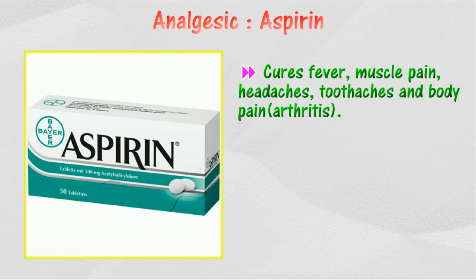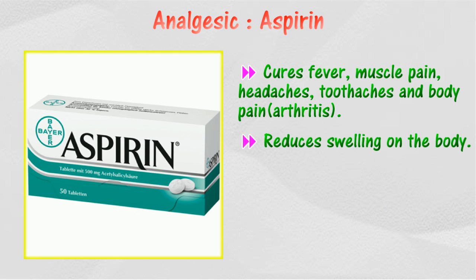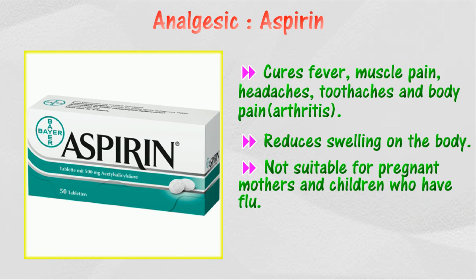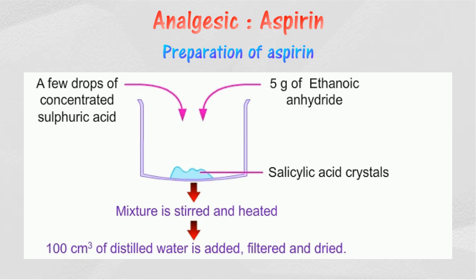Aspirin can be used to treat fever, relieve pain such as headache, toothache, and arthritic pain, reduce inflammation, and reduce the ability of blood to clot. Aspirin can also help to reduce swelling on the body. However, aspirin cannot be taken by children or pregnant mothers.